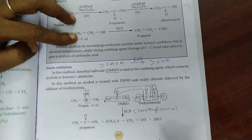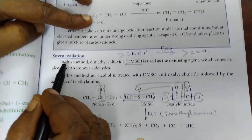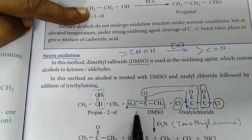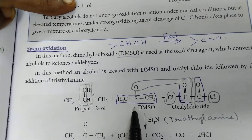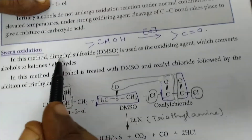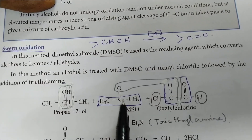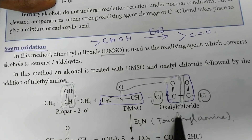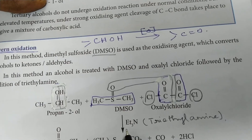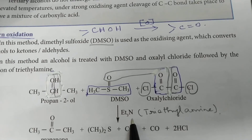Hello students, today let us discuss about Swern Oxidation Reaction. In this method, alcohol is treated with a specified oxidizing agent, that is DMSO — Dimethylsulfoxide. That is followed by the addition of Oxalyl Chloride and Triethylamine, shortly written as Et3N.